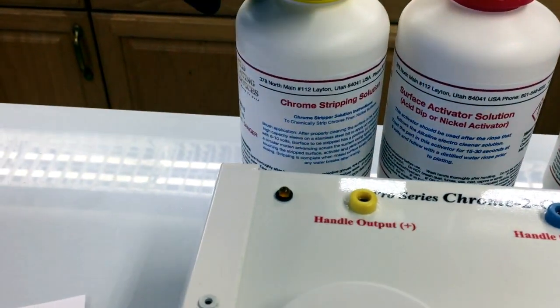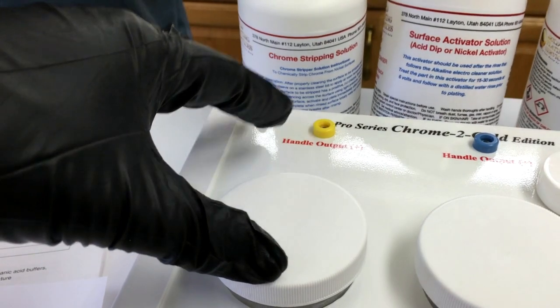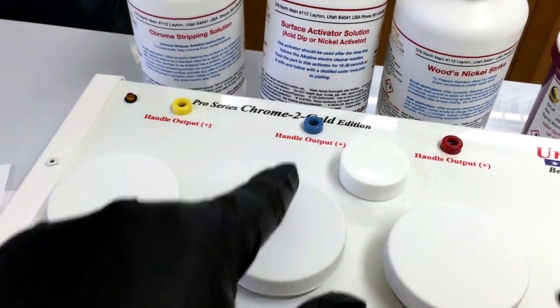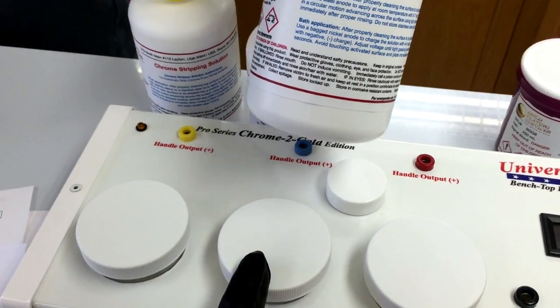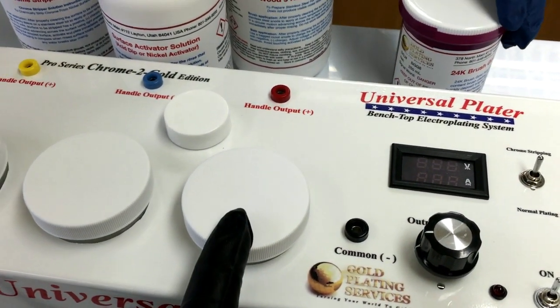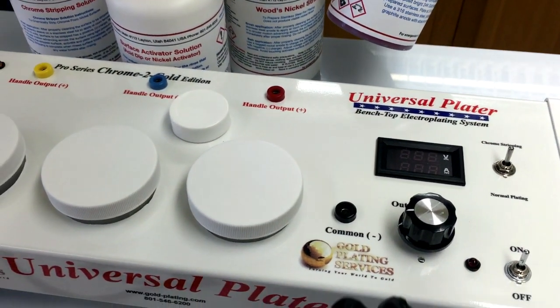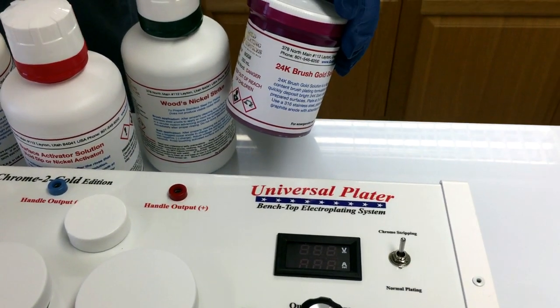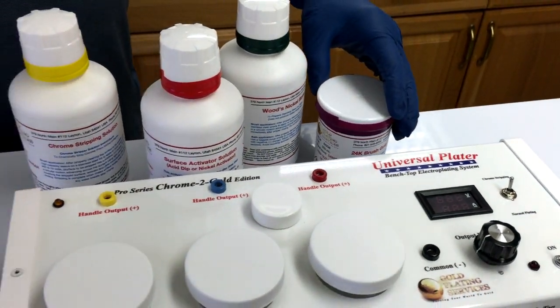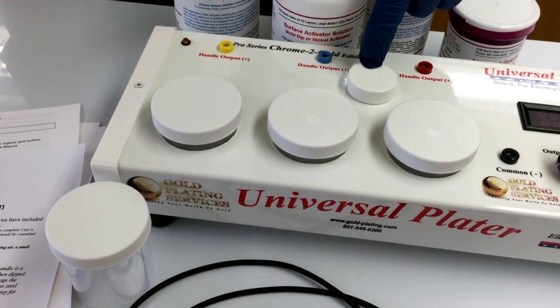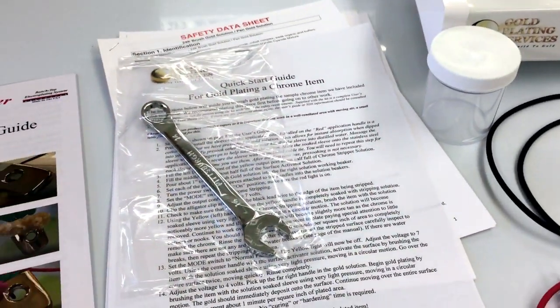We've got our chemicals back here: chrome stripping solution which goes with the yellow port, your surface activator which goes here, or if you were doing stainless steel the Woods nickel strike would also go here instead. This is your gold port, or if you were doing another finish like nickel you would put it in this spot. That's the 24k brush gold that comes in an eight ounce bottle. There are actually two different options: you can get it with eight ounces and no pen gold, or you can get it with four ounces and one ounce of pen gold. Same price.